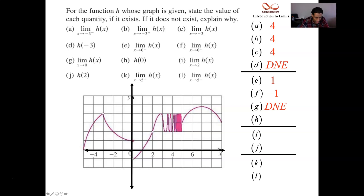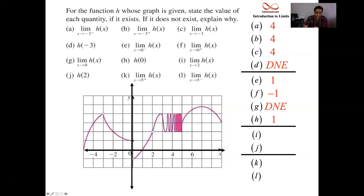The actual function value is kind of hard to see — I overdrew the x and y-axis. There's a closed circle at y equals 1 when x is 0. You intersect the y-axis at 1, so when x is 0, y is 1. There's an open circle at negative 1 — you're headed to negative 1 from the right, but the function is not there. From the left, you're headed to 1, and the function is there.